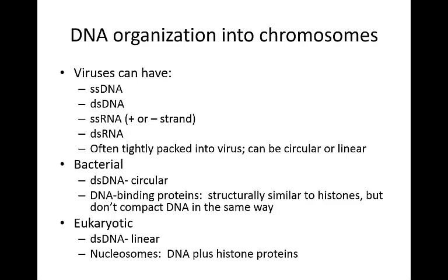There are basically three main types that we might see. The first is viral. Viruses themselves are not technically considered to be alive because they cannot replicate on their own — they need to hijack host machinery in order to replicate. Viruses have a wide variety of nuclear material types. They can be single-stranded DNA, double-stranded DNA, single-stranded RNA — in which case they can be either the plus or minus strand — or double-stranded RNA.